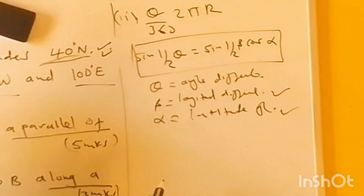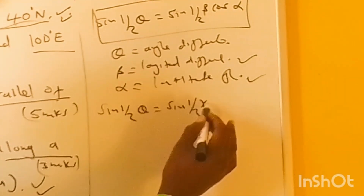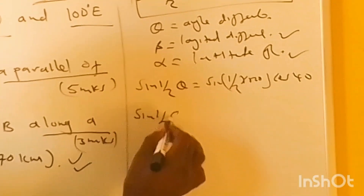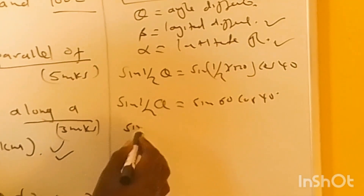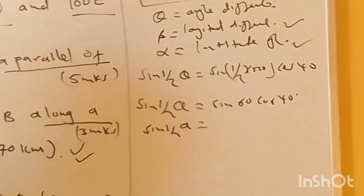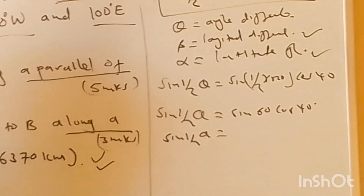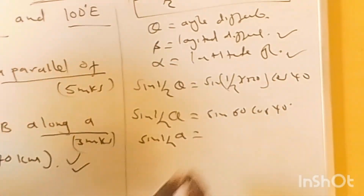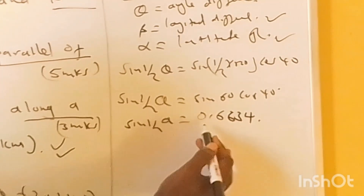Now let's substitute. We have sin(theta/2) = sin(beta/2) × cos(alpha). The longitude difference beta is 120 degrees, and the latitude angle alpha is 40 degrees. So: sin(theta/2) = sin(60°) × cos(40°). Using a calculator: sin(60°) × cos(40°) = 0.6634.